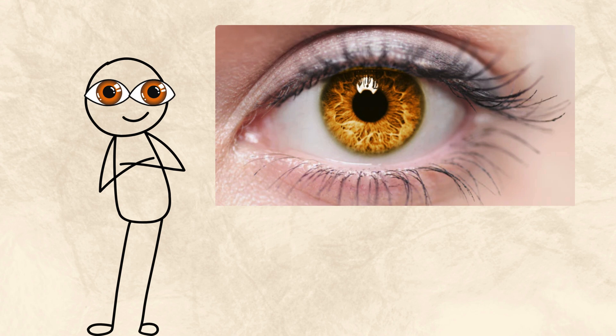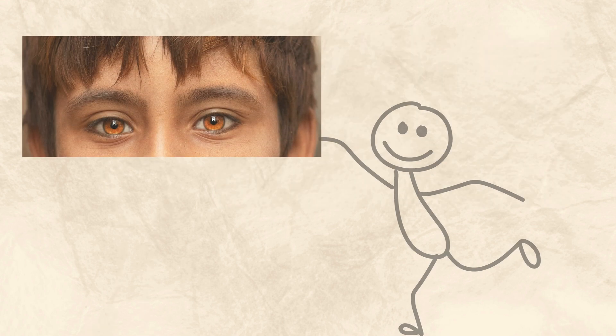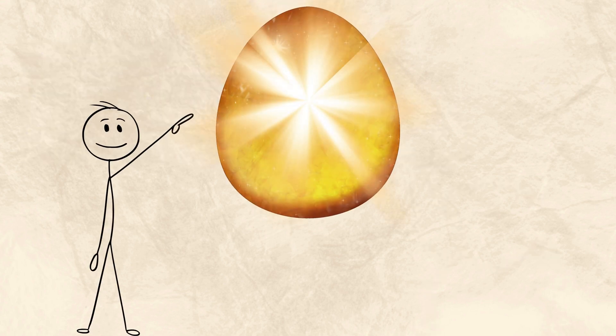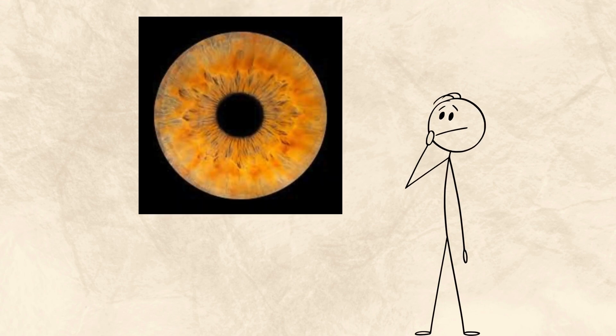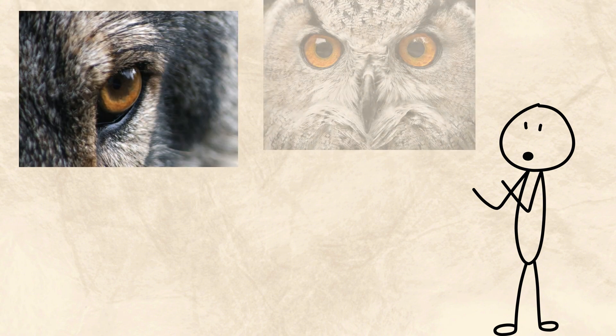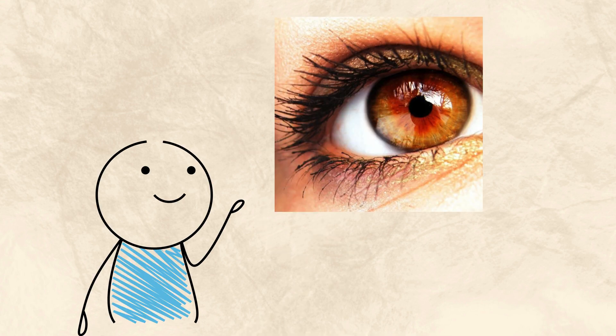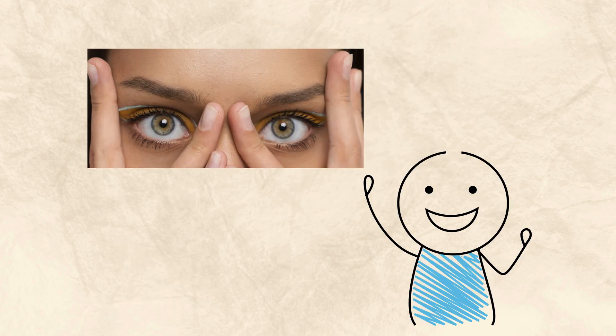Amber eyes are rare and striking. They do not flicker like hazel or glow like green. They shine with a steady light. Amber comes from lipochrome without much melanin. It gives the iris a warm golden or copper tone. This color is more common in animals like wolves and owls. In humans it feels ancient, watchful, focused. Amber eyes do not need to move to say something. They just stay and observe.